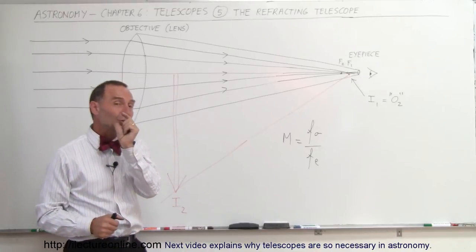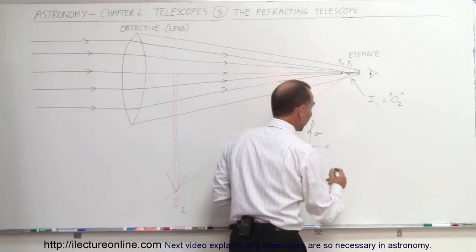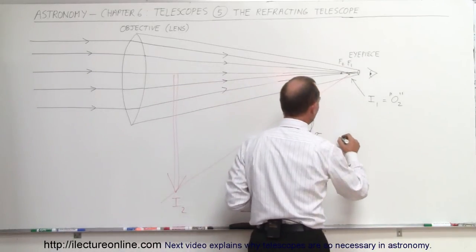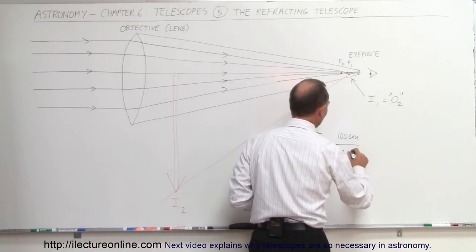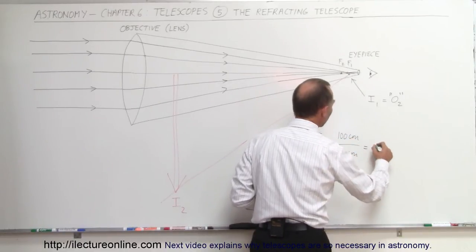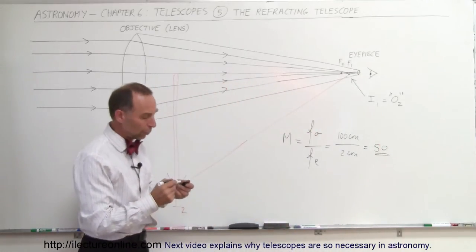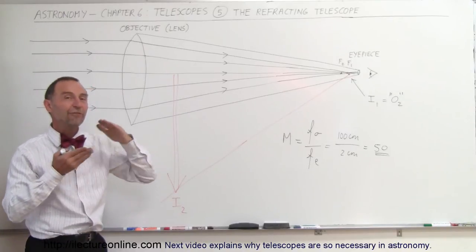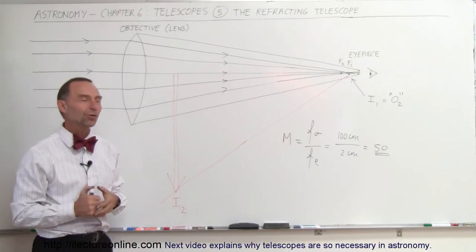And the focal length of the eyepiece is usually very small. So, for example, let's say for a typical telescope that you can buy at the local store, you may say that the focal length of the objective is 100 centimeters, and the focal length of the eyepiece is 2 centimeters, and then simply, the magnification is then a ratio of 50 to 1. In other words, all objects that you see through that telescope would then appear 50 times larger as you would see them with the naked eye when you're not using a telescope.